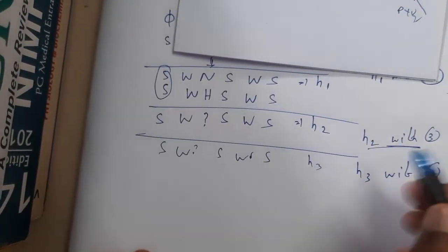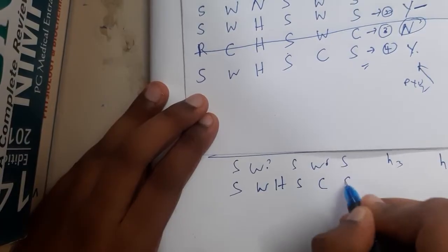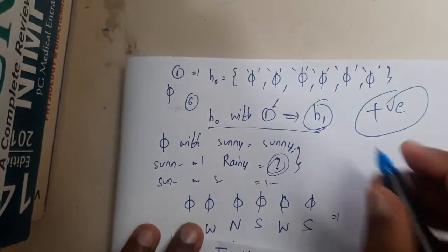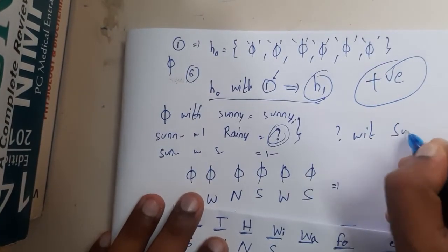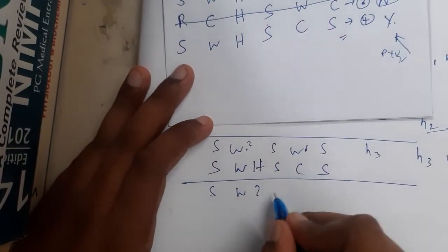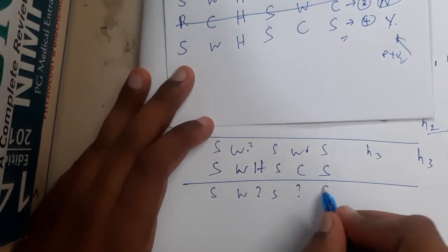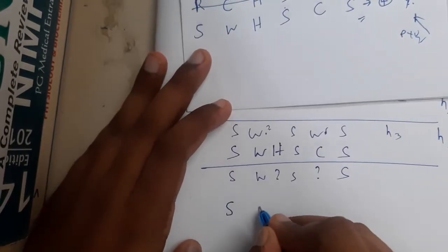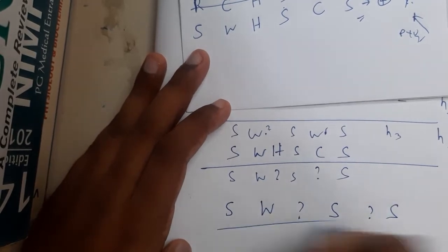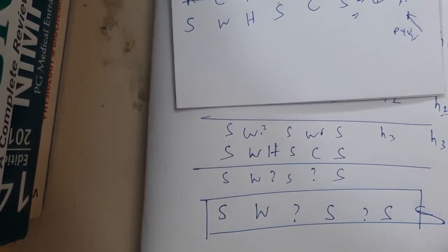Now compare h3 with row 4: (sunny, warm, ?, strong, warm, same) vs (sunny, warm, high, strong, cool, same). Sunny=sunny, warm=warm, ?∘anything=?, strong=strong, warm≠cool → '?', same=same. The rule is: question mark with anything is question mark. Final hypothesis h4 = (sunny, warm, ?, strong, ?, same).